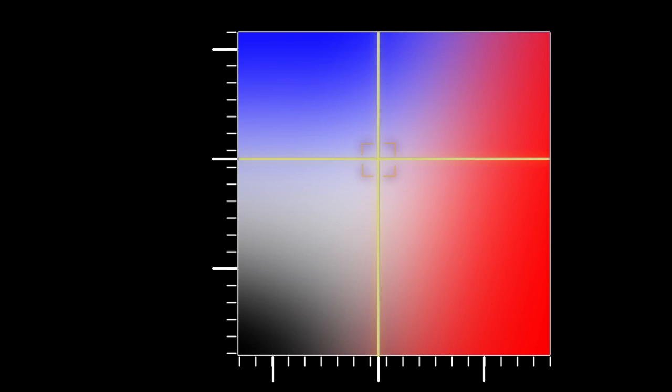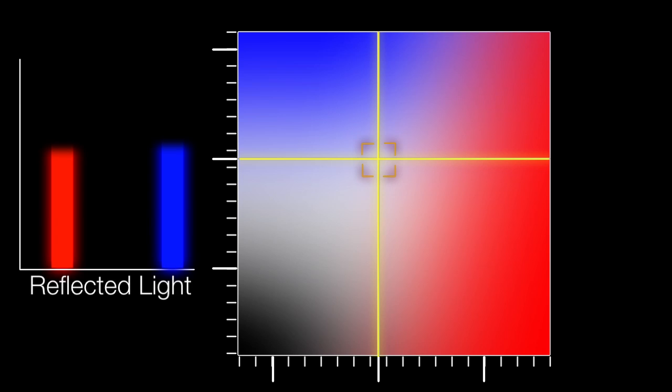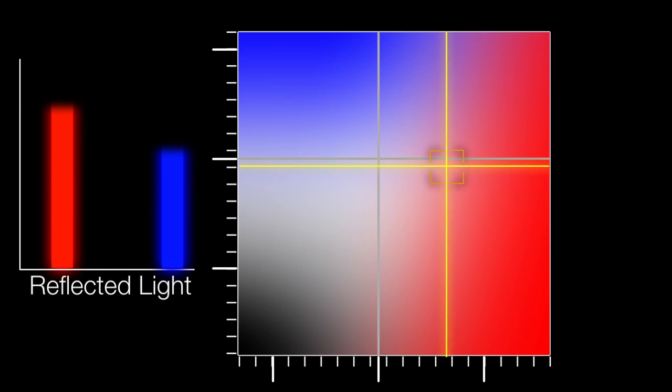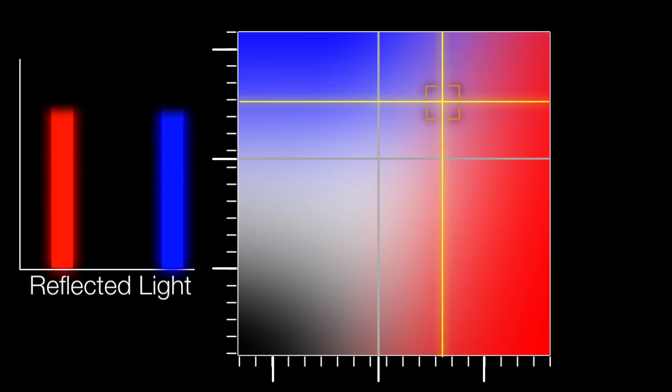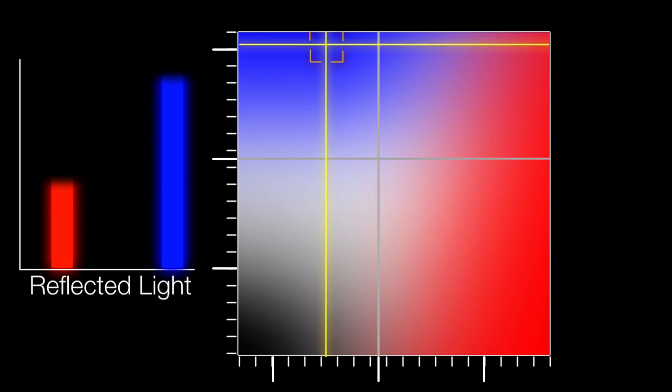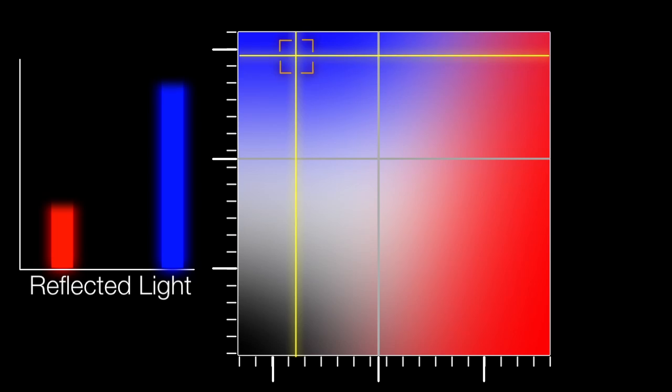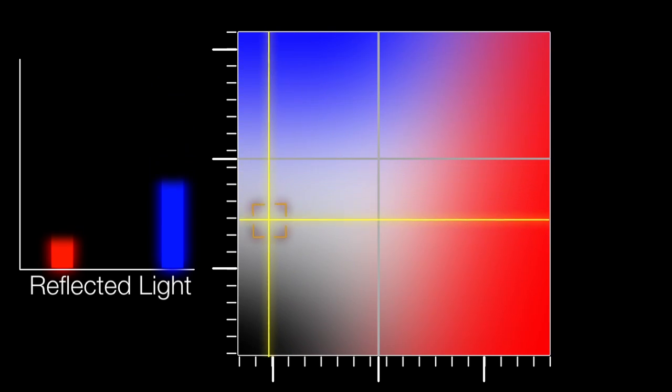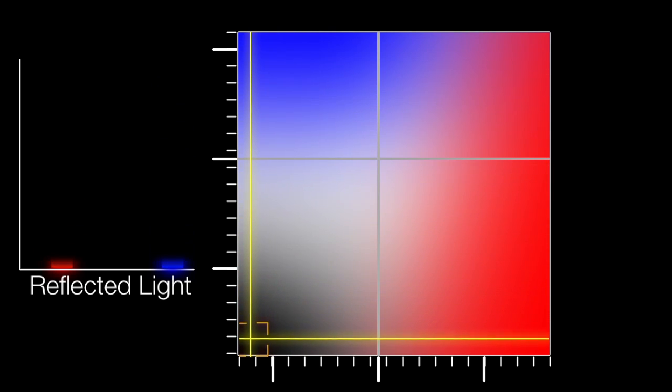These crosshairs mark the spot where a planet would perfectly reflect all the light from the Sun. The more red light a planet reflects, the farther it moves to the right on this chart. The more blue light it reflects, the higher it goes. And if the planet reflects relatively little blue and red light, it falls in the dark section.